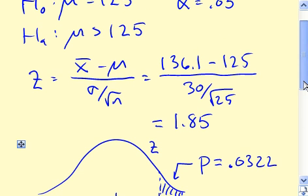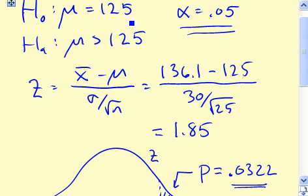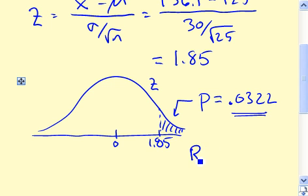Alpha was 0.05, so we compare alpha to the P-value. In this case the P-value of 0.0322 is smaller than alpha. That tells us there is enough evidence to conclude that the null hypothesis isn't true and we should go with the alternative hypothesis. So we reject H0.